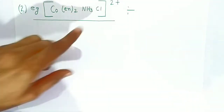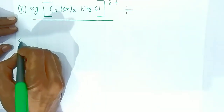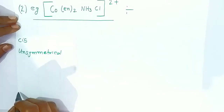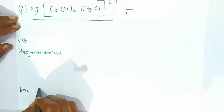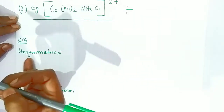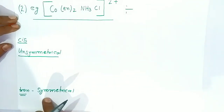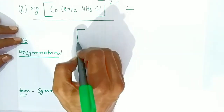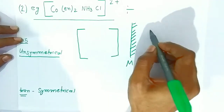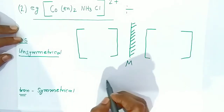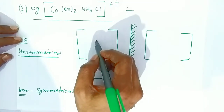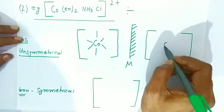Another example: if ammonia and chloride are the two monodentate ligands, same way you write the cis form which is always unsymmetrical, and the trans form which is symmetrical. The unsymmetrical cis will form optically active compounds while the symmetrical trans will form an optically inactive compound. For the cis isomers, two structures are drawn with a mirror in between; for trans, only one complex is drawn.